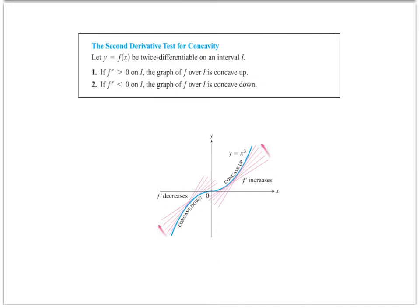The first derivative test said set the first derivative equal to zero, and that will find critical points. The second derivative test says if I have the second derivative and it's greater than zero, then I'm going to have concave up. If I have the second derivative and it's less than zero, I have concave down. What's the second derivative mean? Acceleration.